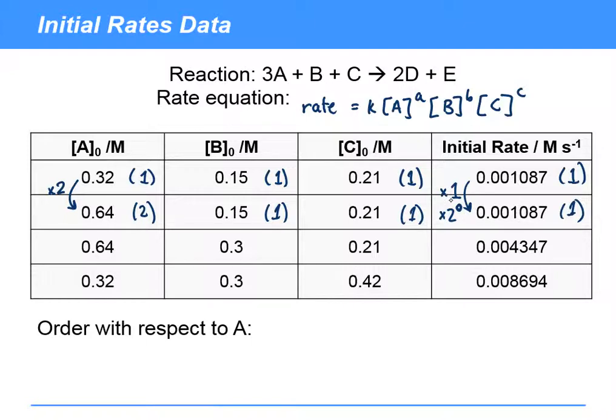So what that actually means then is that A equals 0. So this reaction is actually 0th order with respect to A, and as a result of that we can rewrite this rate equation as having a 0 in here.